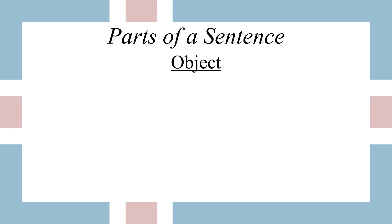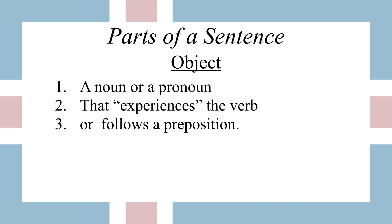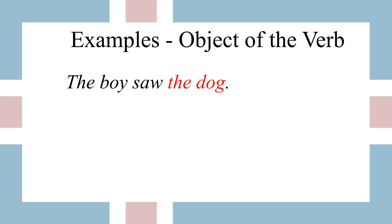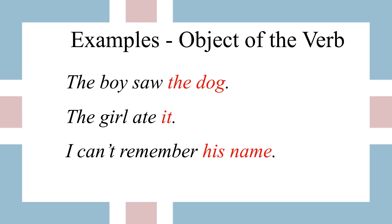Next, we're going to learn about the object of the sentence. The object is also a noun or a pronoun, but this is the noun or pronoun that experiences the verb — it usually comes after the verb. In 'the boy saw the dog,' the boy is doing the seeing, but what is being seen? The dog. The dog is the object. 'The girl ate it' — it was what was eaten. 'I can't remember his name' — I is the subject doing the remembering; his name is the object of the verb.